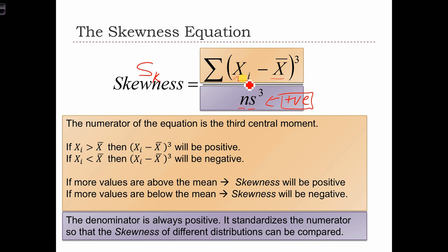But on the other hand, if xi is less than x-bar, so if we have values below the mean, then we're going to have this as a negative value, and the cube of that will also be negative.